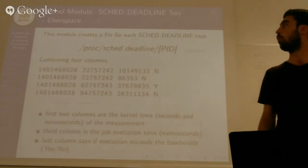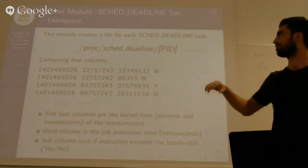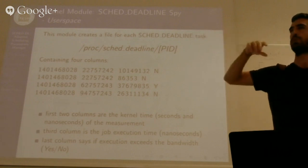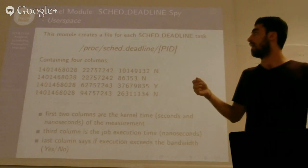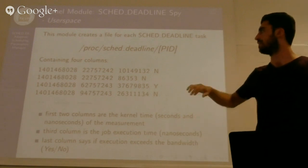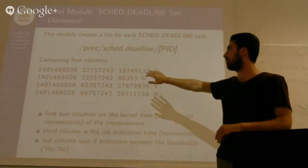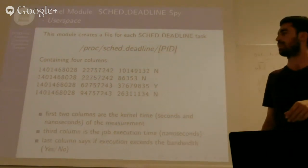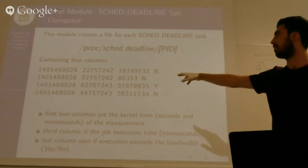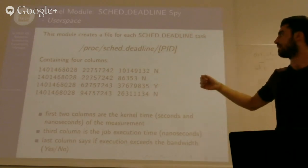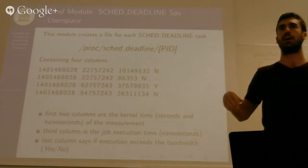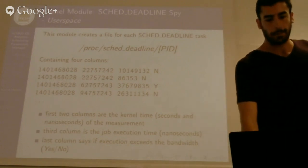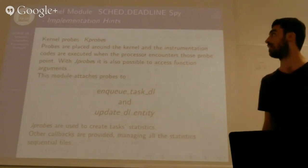Now, for the daemon, what the daemon provides is this. So it creates a folder inside the proc SCHED_DEADLINE, and the file for each process running on SCHED_DEADLINE. And those files contain the data in this format. We have the first two columns that are the timestamp of the sample, then the value of the sample in microseconds. And the last column is just a hint on if the task exceeded or not the bandwidth.